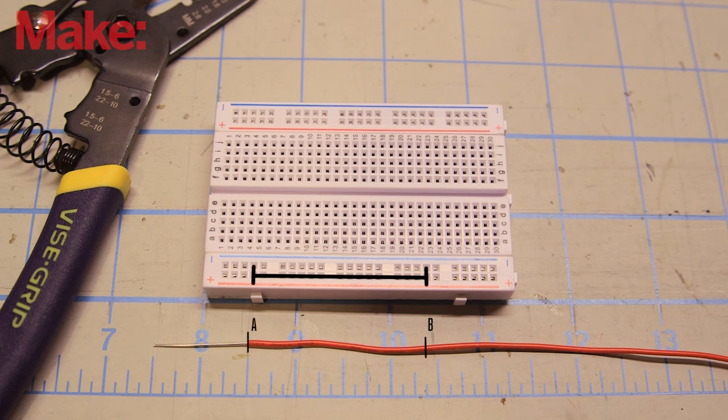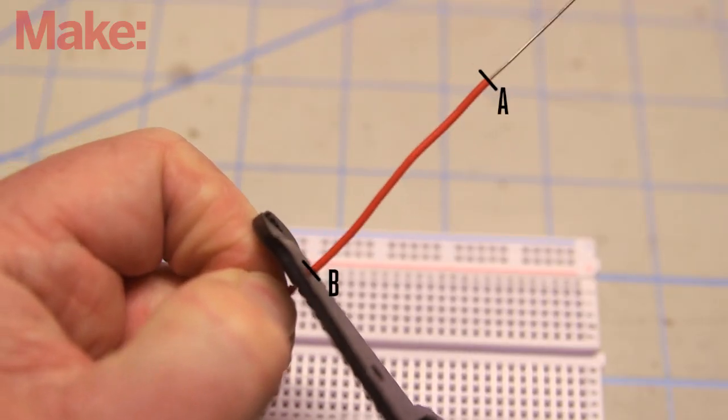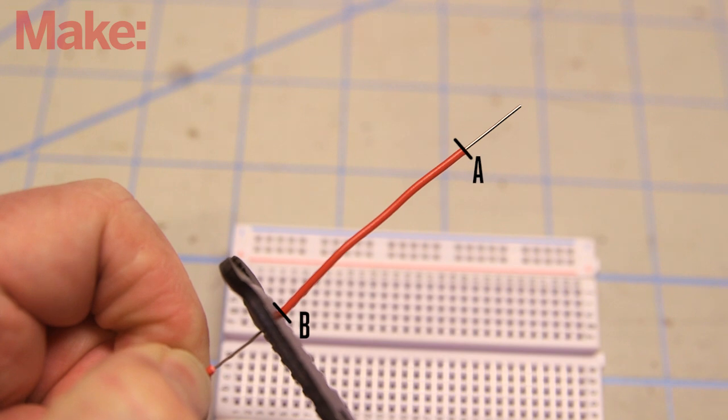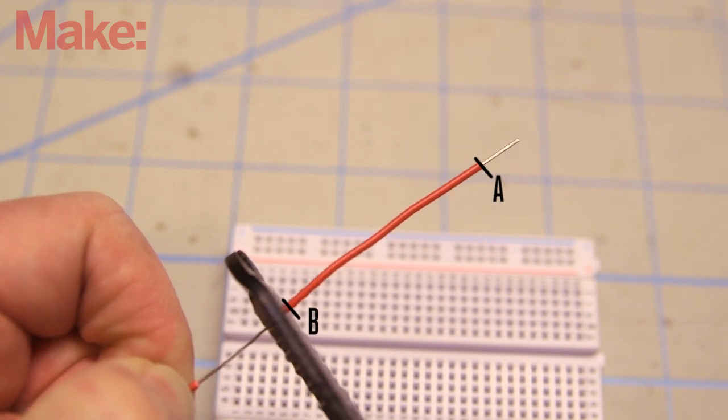In the diagram, it's the distance from A to B. Apply the wire strippers at point B and drag the insulation along until it's one-quarter inch from the end of the bare wire. Cut the wire at point C.